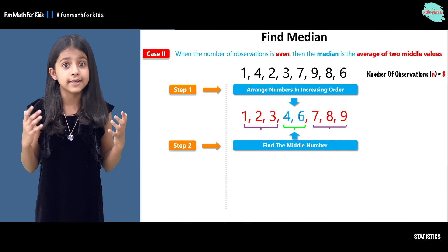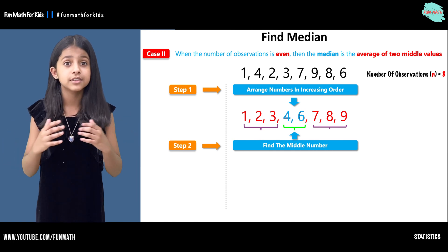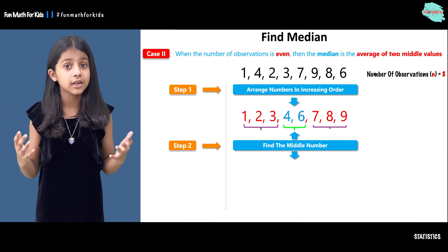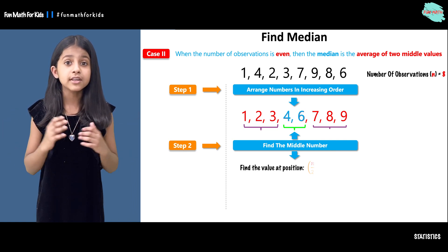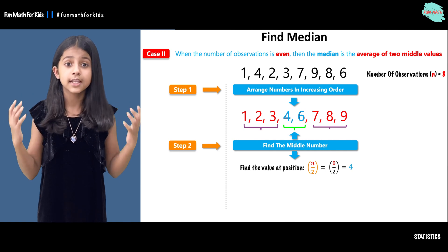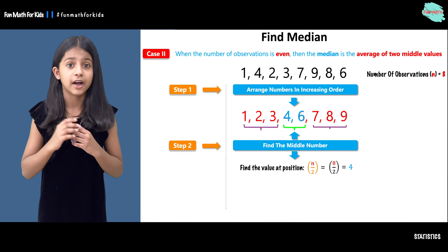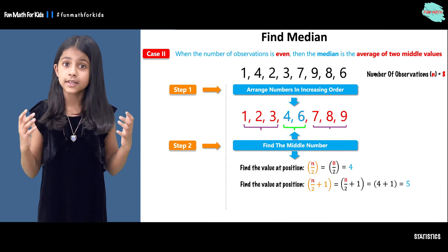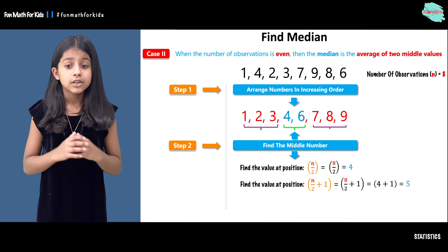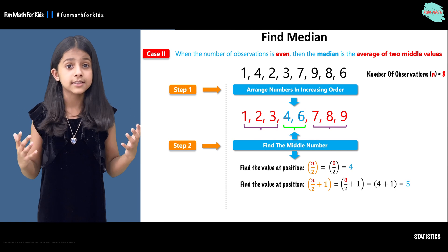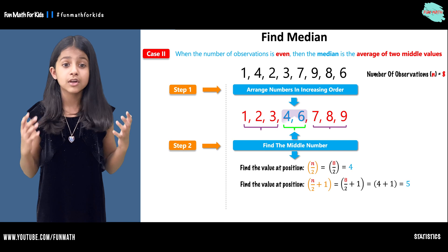In this set there are only eight numbers, so it's easy to find the two middle values. But what if there are millions of numbers in a set? There has to be some formula to find the two middle values, right? To find the first middle value, you will do n / 2, which gives you eight over two, which equals four. So the fourth number is four — that's the first middle value. To find the second middle value, you will do (n / 2) + 1, which is eight over two plus one, giving you four plus one, which equals five. The fifth number in the data set is six. So the two middle values are four and six.